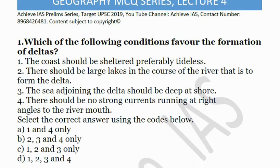The first statement is correct — the course should be sheltered, preferably tideless — because if tides are there, the delta will not form as sediments will be washed away. So statement 1 is certainly a condition needed for delta formation. Statement 2 is incorrect because if there are large lakes in the course of the river, sediments carried by the river get deposited in these lakes. So when the river enters the sea, it doesn't have much sediment. Since sediment is the only reason delta forms, less sediment means no delta formation.